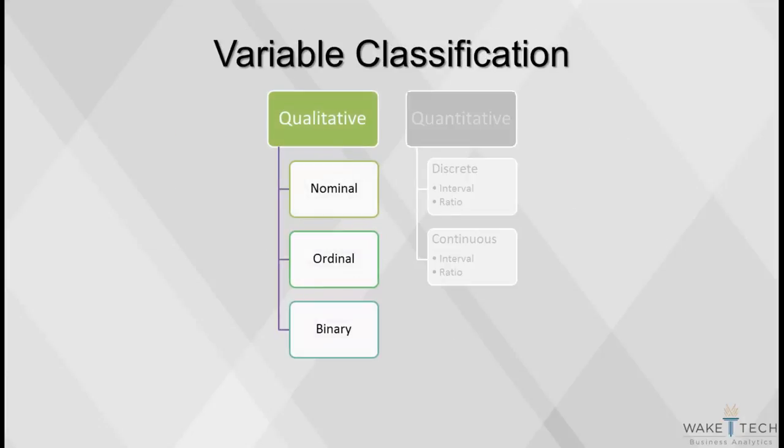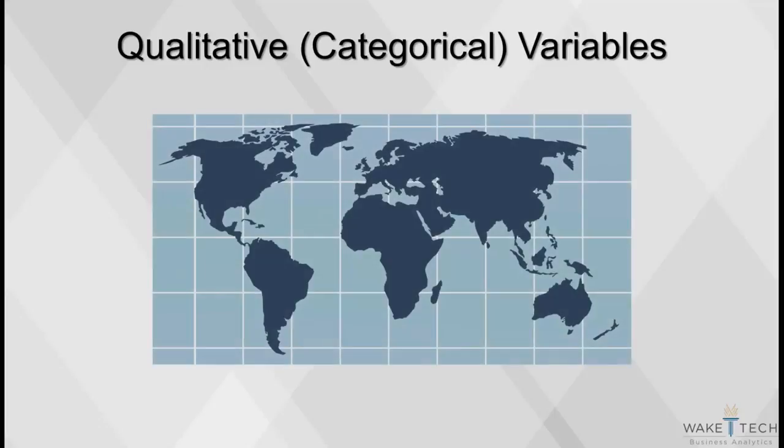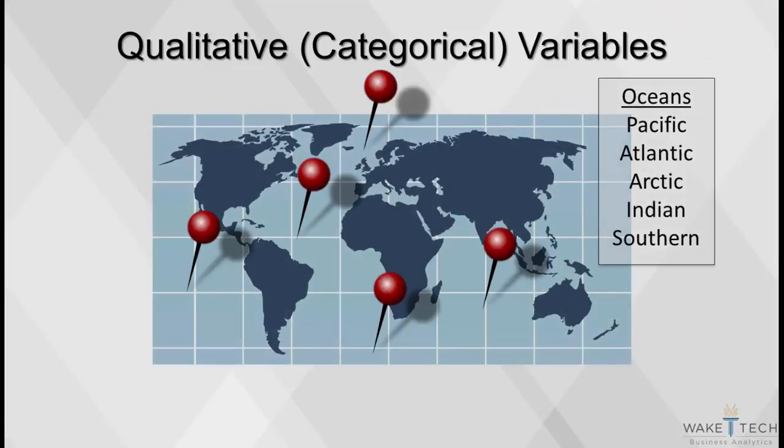We will now discuss qualitative variables in detail. Categorical variables are those that have only a few possible values, thus assigning each value to a particular group or category. For example, oceans are a categorical variable.